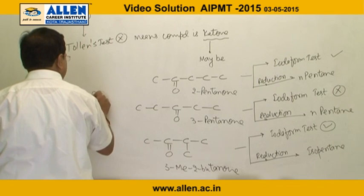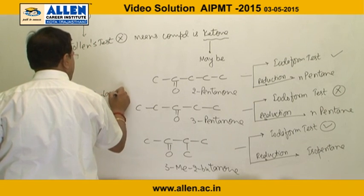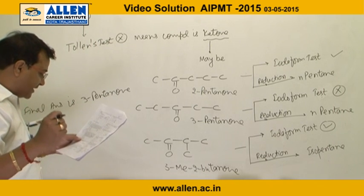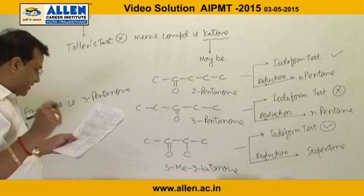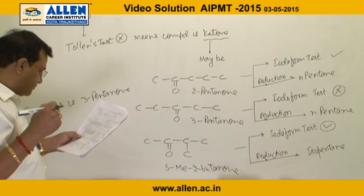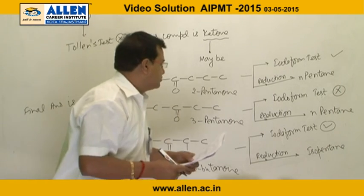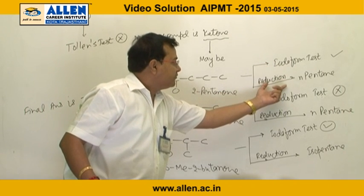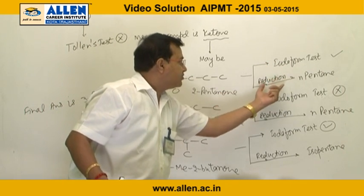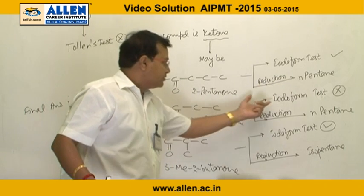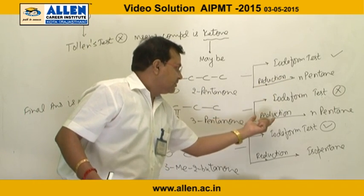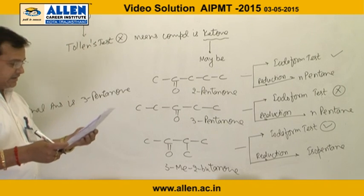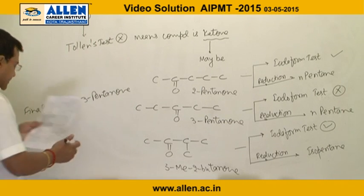According to the question, the compound produces n-pentanol on reduction and gives a negative iodoform test. 2-pentanone shows the iodoform test so it is eliminated. 3-pentanone does not show the iodoform test and forms n-pentanol on reduction, so the final answer is 3-pentanone, which is option 2.